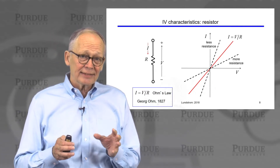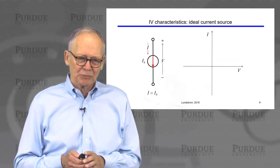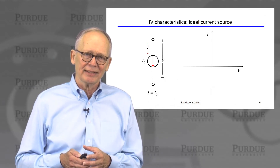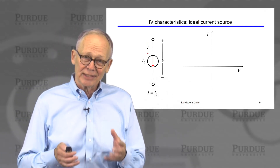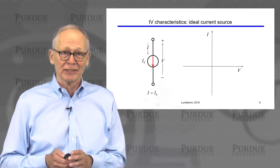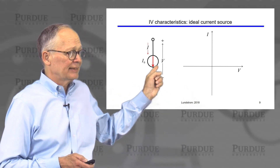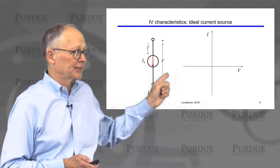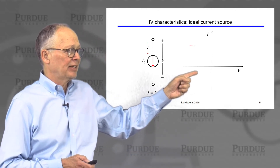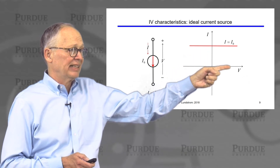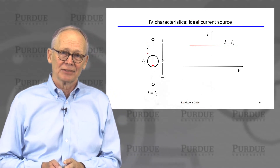Another device we frequently introduce is an ideal current source. They don't exist in practice, but we can make some pretty good approximations. The property of an ideal current source is that it delivers a specific current I₀ no matter what voltage we put across its two terminals. So when we plot its IV characteristics, we get the current I₀ independent of the voltage across the two terminals.